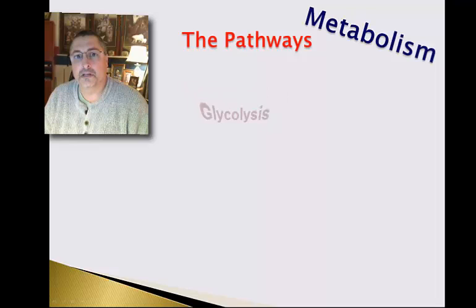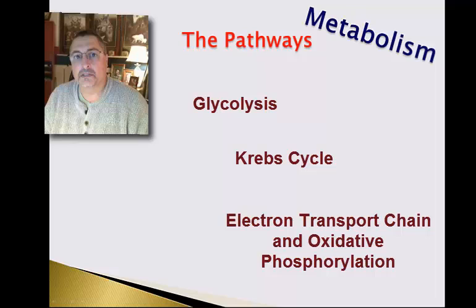The sets of reactions associated with catabolism include glycolysis, the Krebs cycle, and the electron transport chain along with oxidative phosphorylation. Before we get too involved in looking at these reactions, let's first establish some ground rules as to where they are located inside the cell.